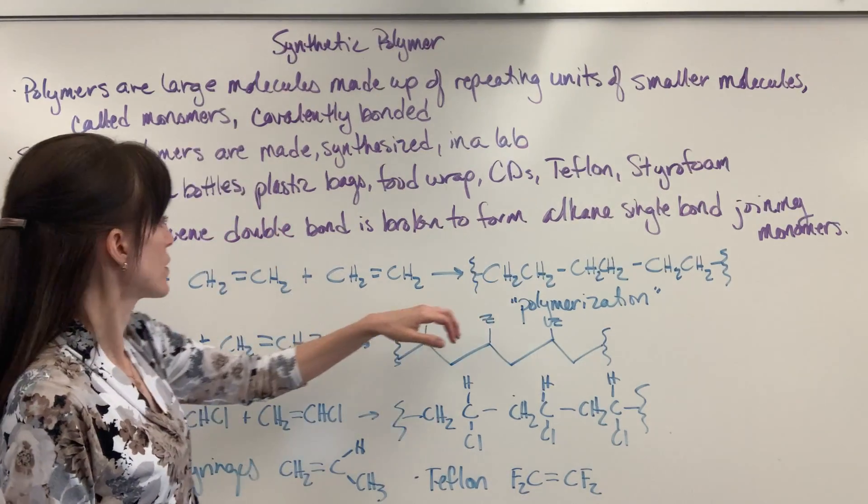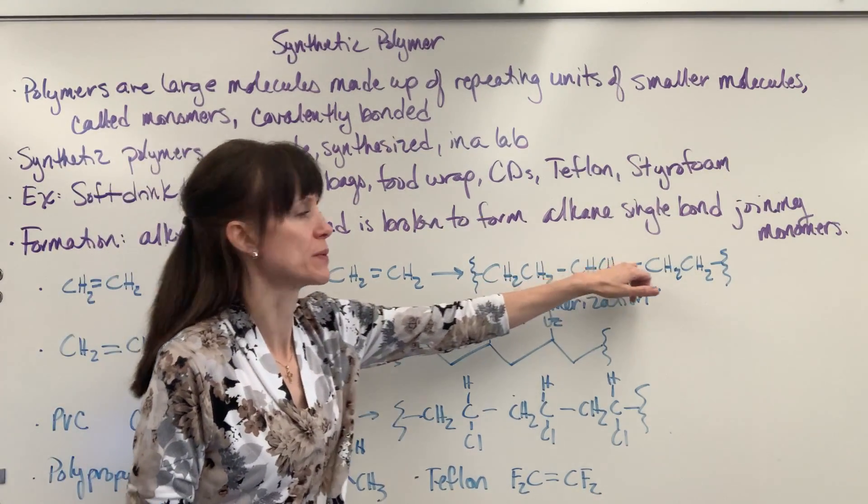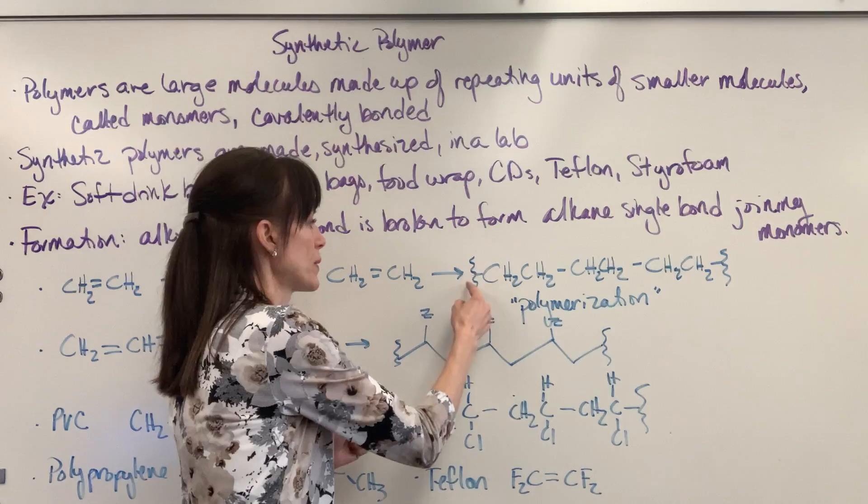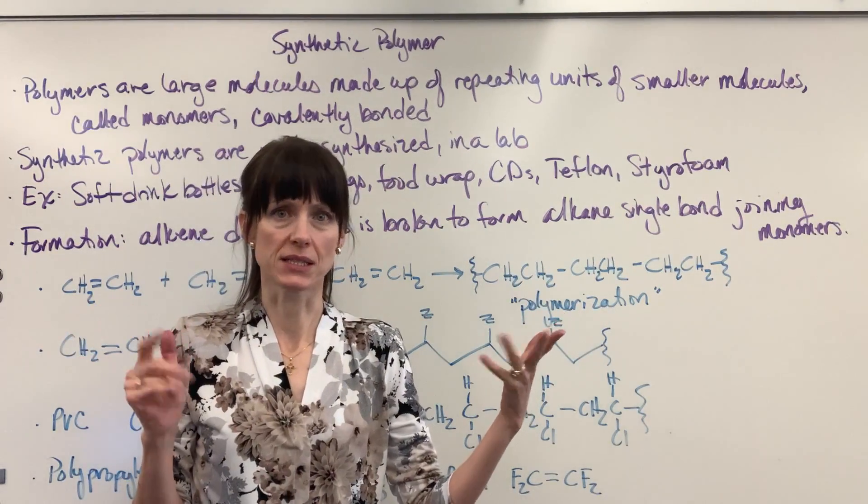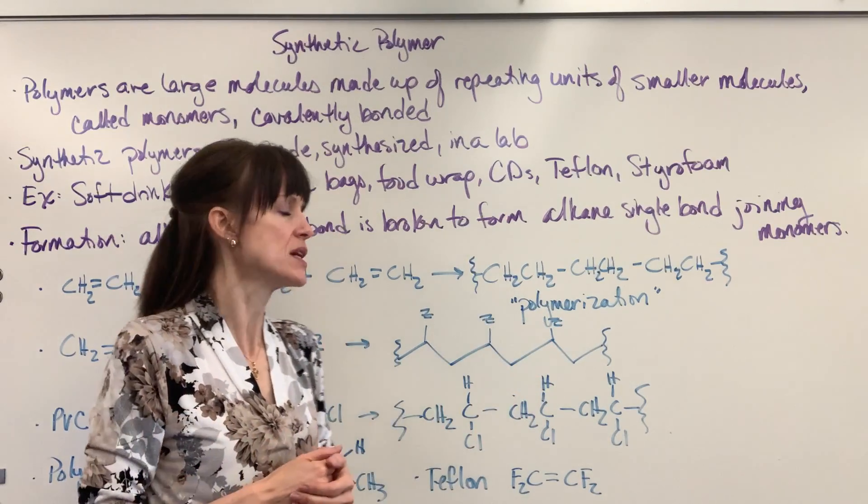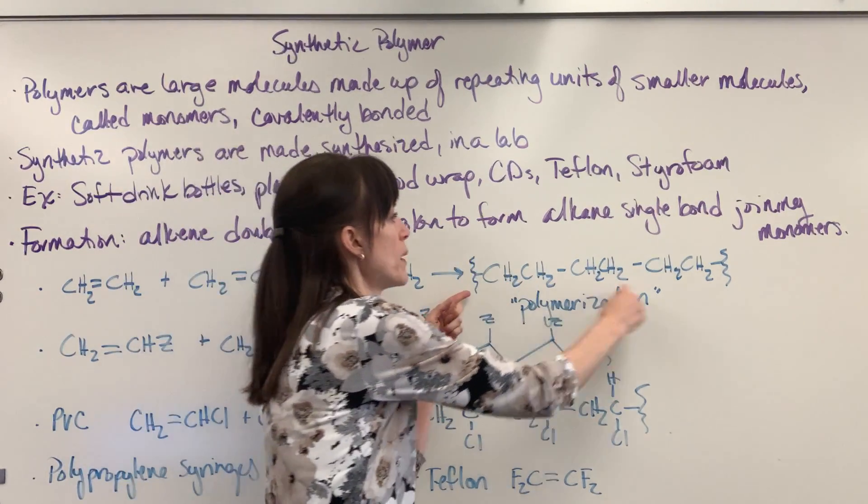So you're adding now the monomers to each other. And notice how I drew this. I do a squiggly line right here and a squiggly line over there. You can have a thousand of these connected together. You can have a lot of these monomers connected together. That creates a polymer.